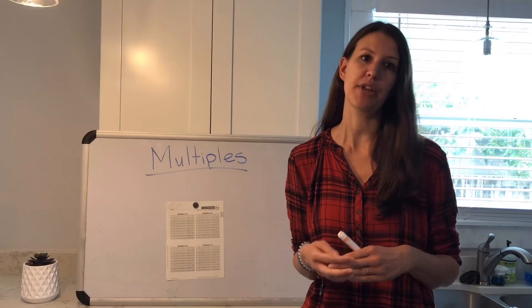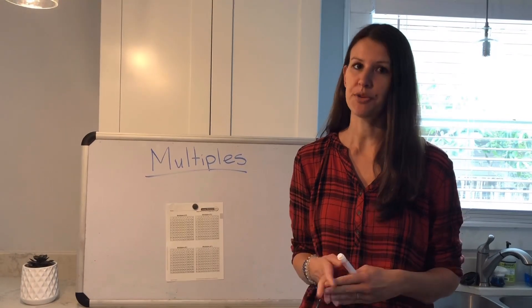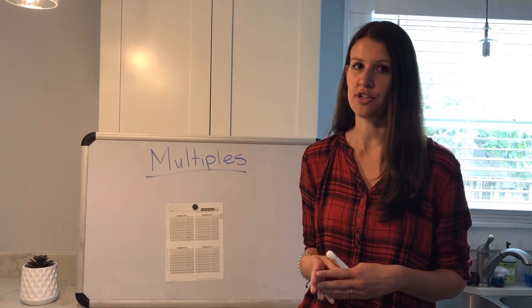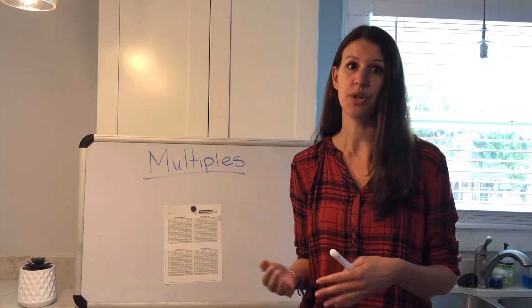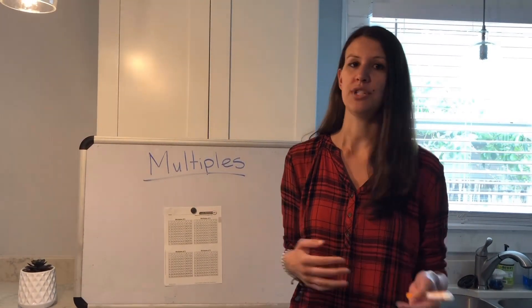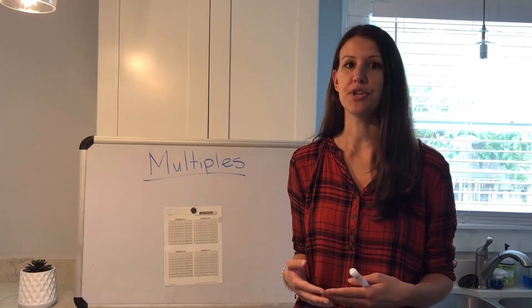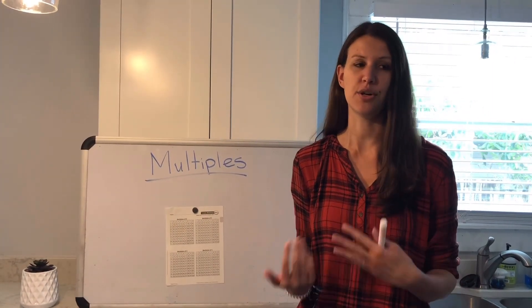So if you're counting or if you're multiplying by two, the multiples of two are going to be all the answers that you say for the times two problems. Like one times two is two, two times two is four, two times three is six. So the multiples of two are two, four, six and so on.